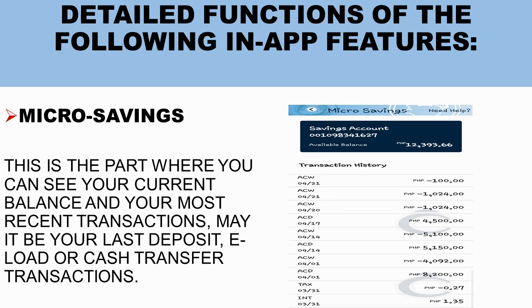Now let's go into the detailed functions of each in-app feature. Starting with Micro Savings: on the screen you can see your current balance, and you can also see your transaction history for the past couple of months or transactions — whether interest was added, a deduction, a withdrawal, a deposit, or a load — everything shows up in the transaction history under the Micro Savings button.